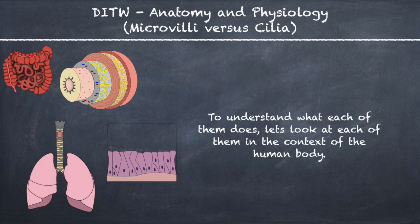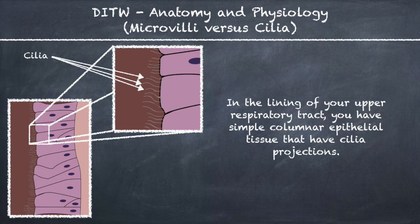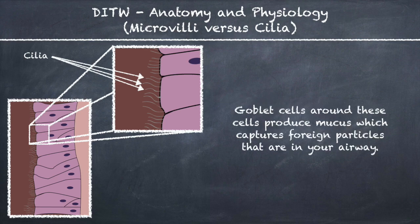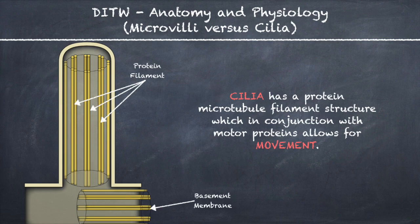To understand what each of them does, let's look at each of them in the context of the human body. In the lining of your upper respiratory tract, you have simple columnar epithelial tissue that have cilia projections. Goblet cells around these cells produce mucus which captures foreign particles in your airway. The purpose of the cilia is to move the mucus and the foreign particles up the airway where they can be swallowed or coughed out. Cilia have a protein microtubule filament structure which, in conjunction with motor proteins, allows for movement.